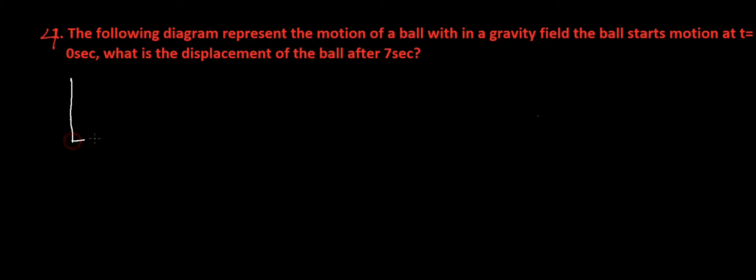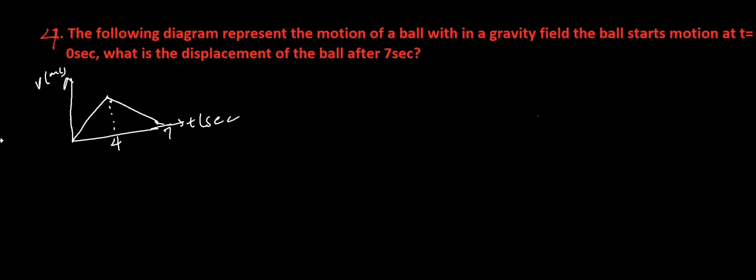The graph looks like this. Let's say four meters, this is four seconds. This is time in seconds. This one is speed in meters per second. And here is 40 meters per second.